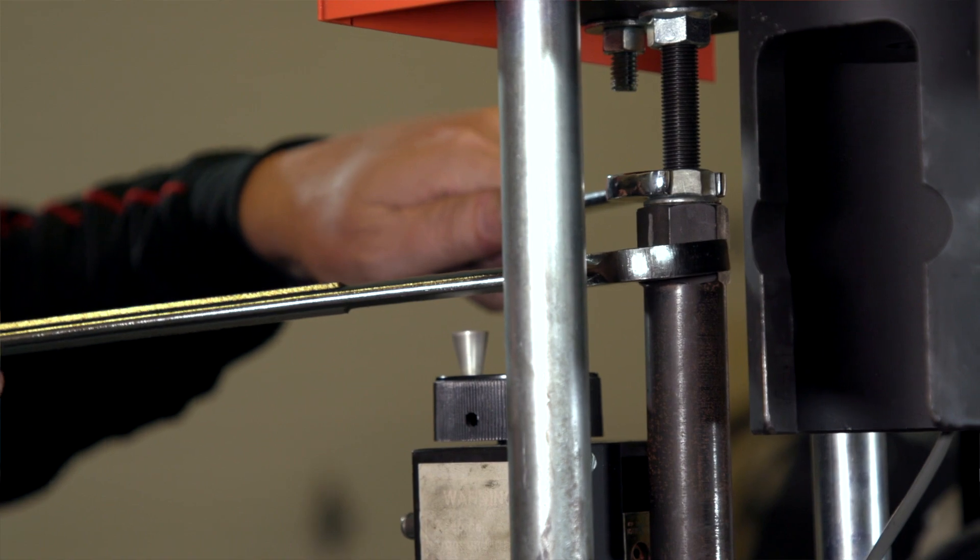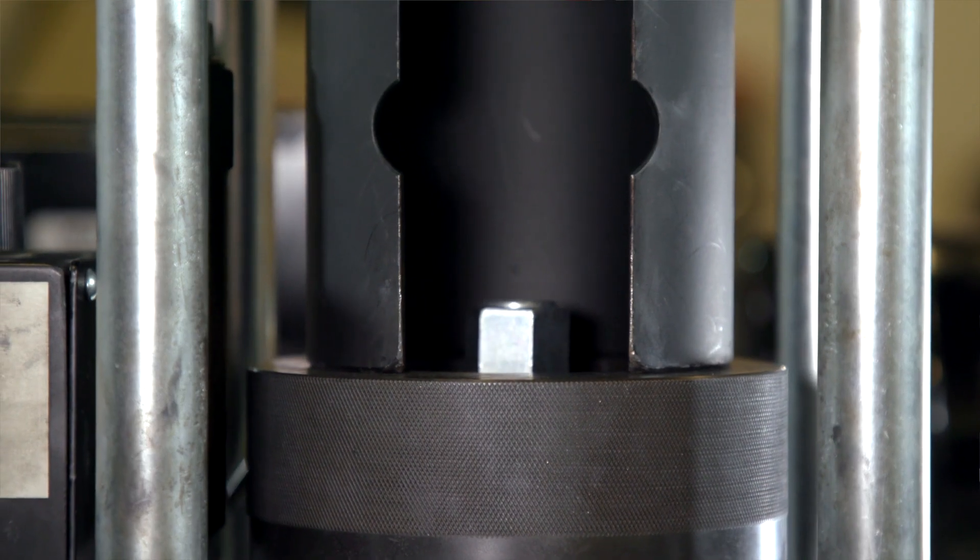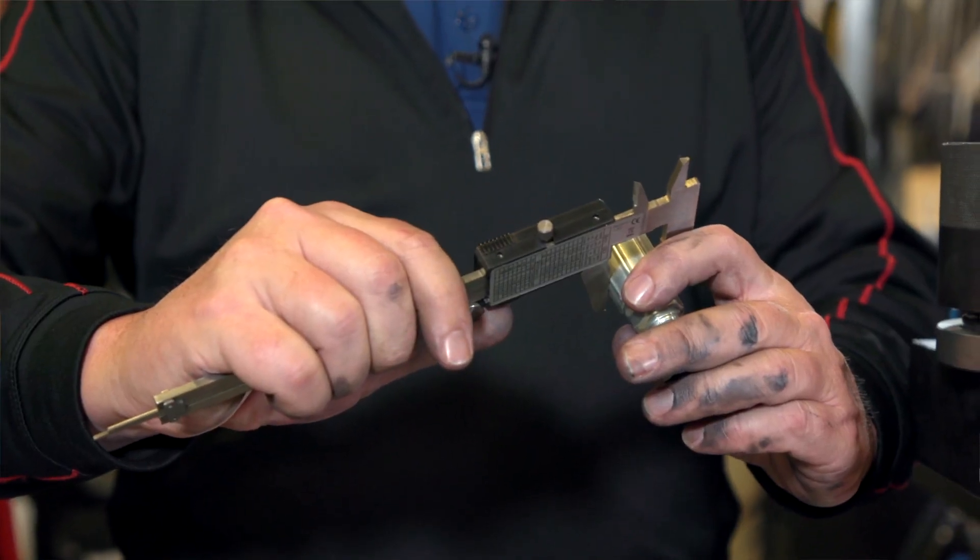Then, tighten the lock nut down. Crimp a new 8G coupling and measure the crimp diameter of the fitting to verify that you are within the acceptable limits.